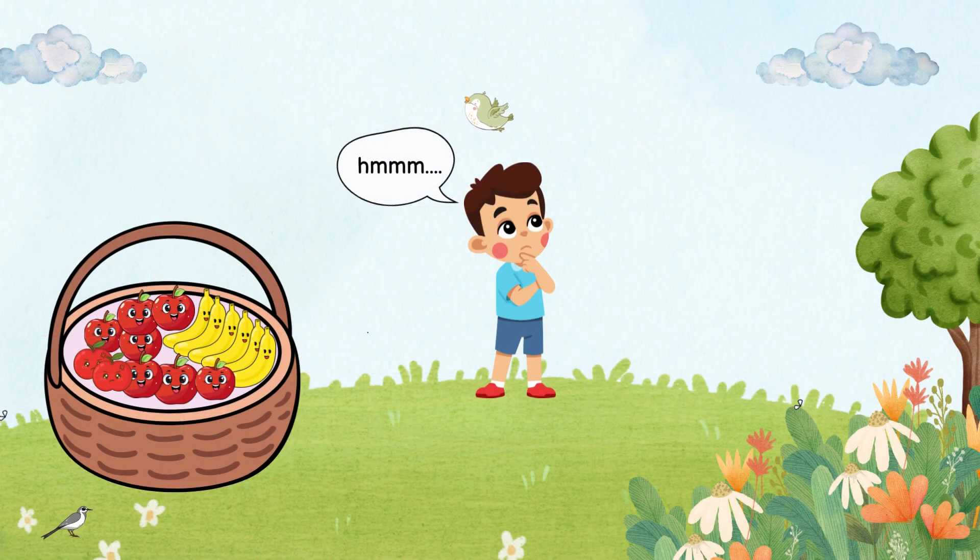Suppose you have 15 fruits in a basket, 9 apples and 6 bananas. Now it's your turn. Can you figure out how to place the apples and bananas into the part-whole cherry model? Think carefully. What are the parts and how do they combine to make the whole?